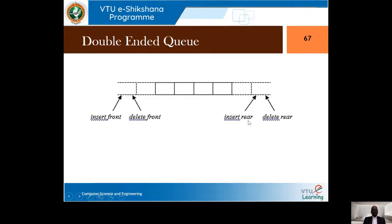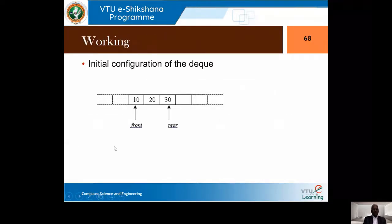You can see in this figure that insertion is happening at front as well as rear. Deletion also happens at front as well as rear. Rear insertion and front deletion happen in normal queue, so we don't need to discuss those. In order to support front insertion, the queue is considered circular because decrementing front below zero is unacceptable. Instead, it wraps around to max minus one.